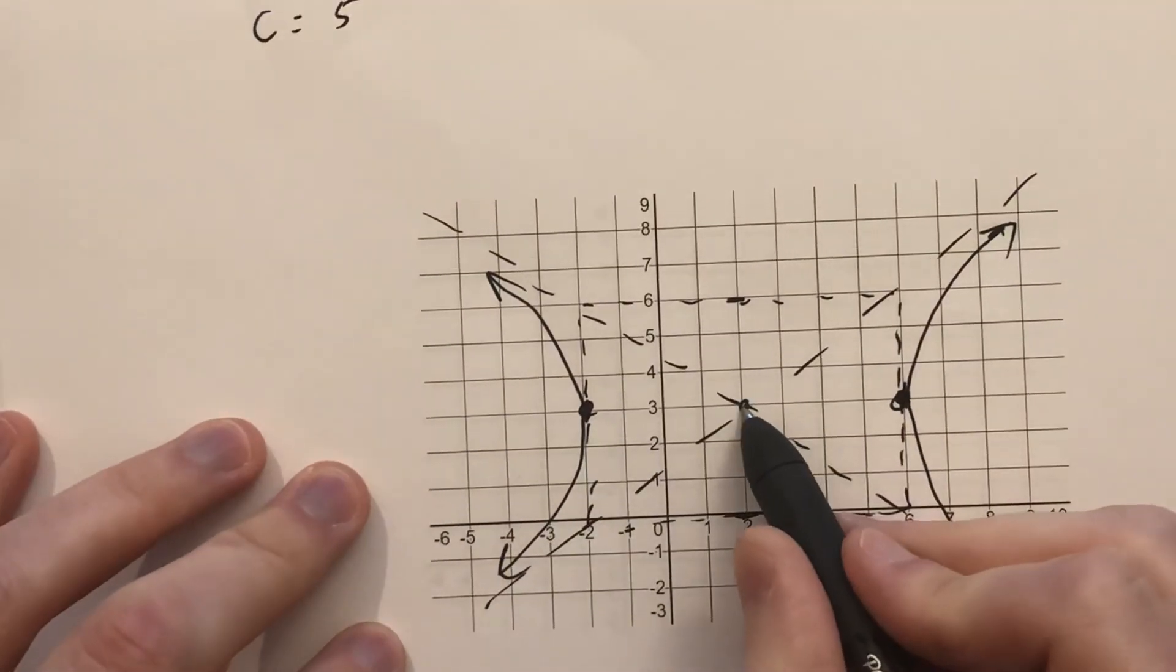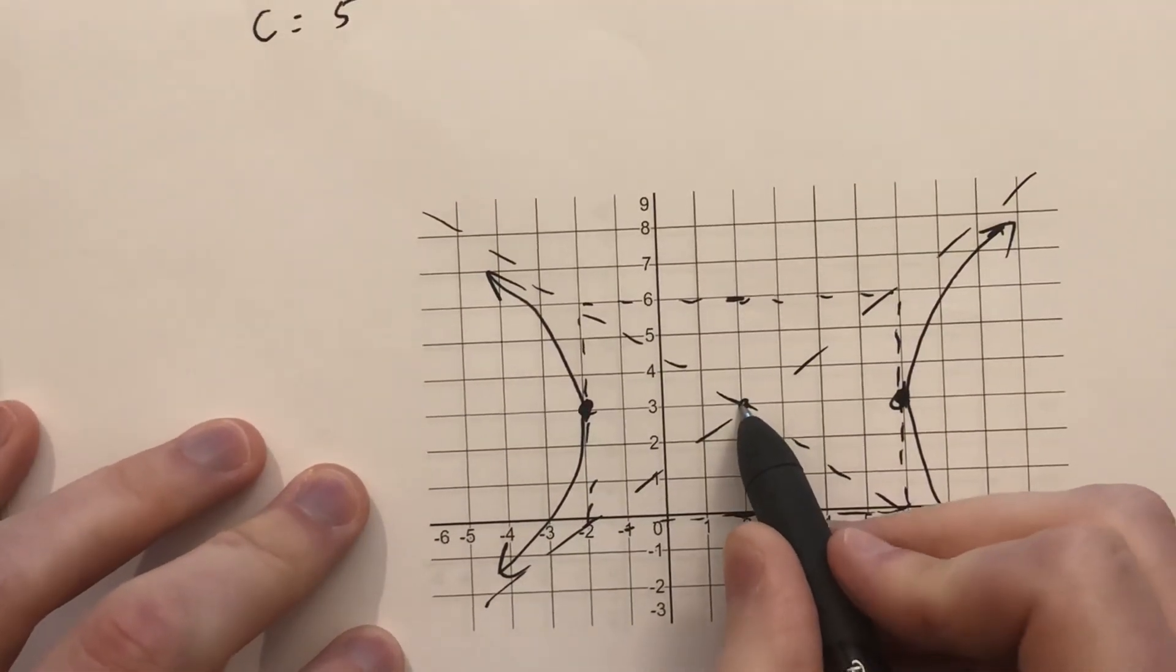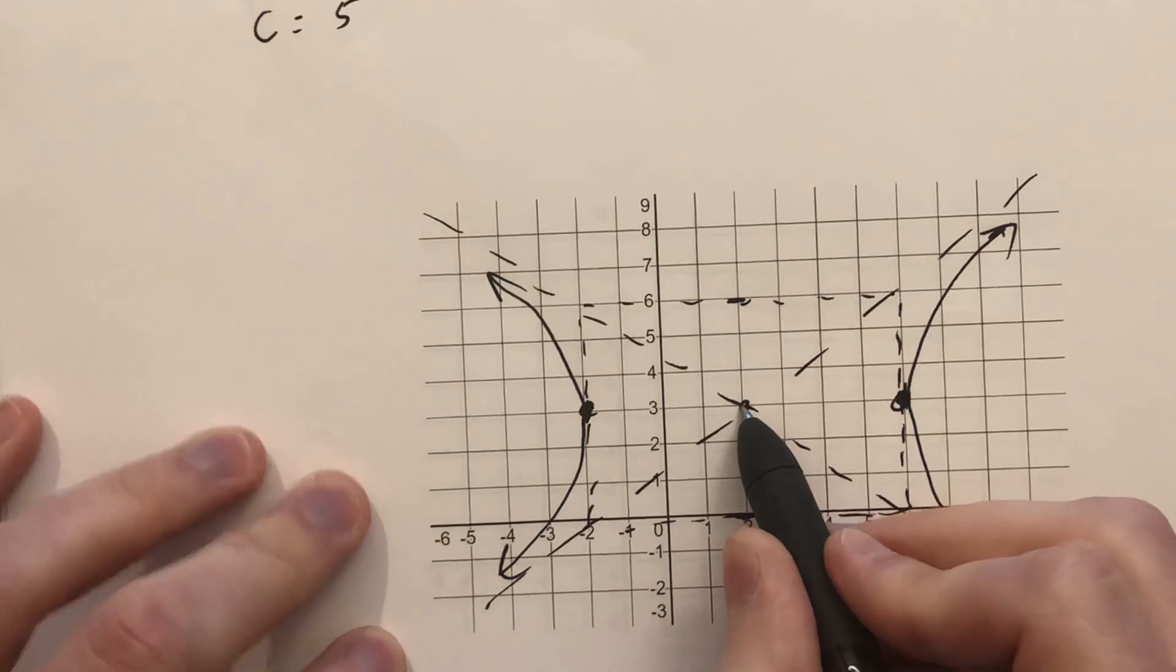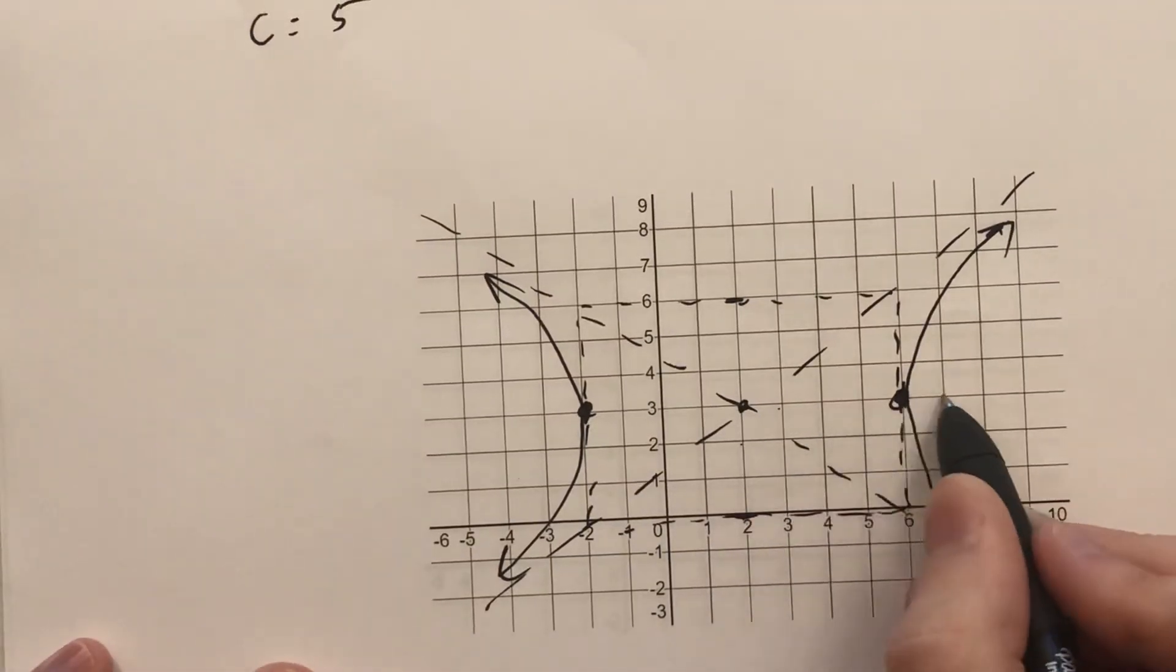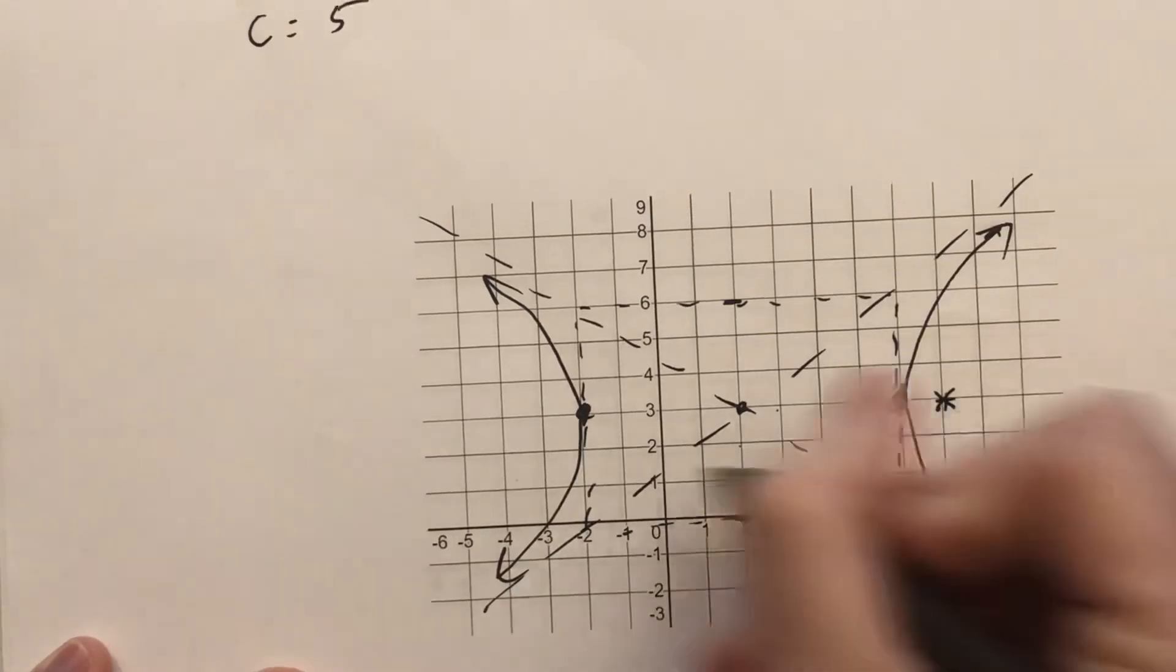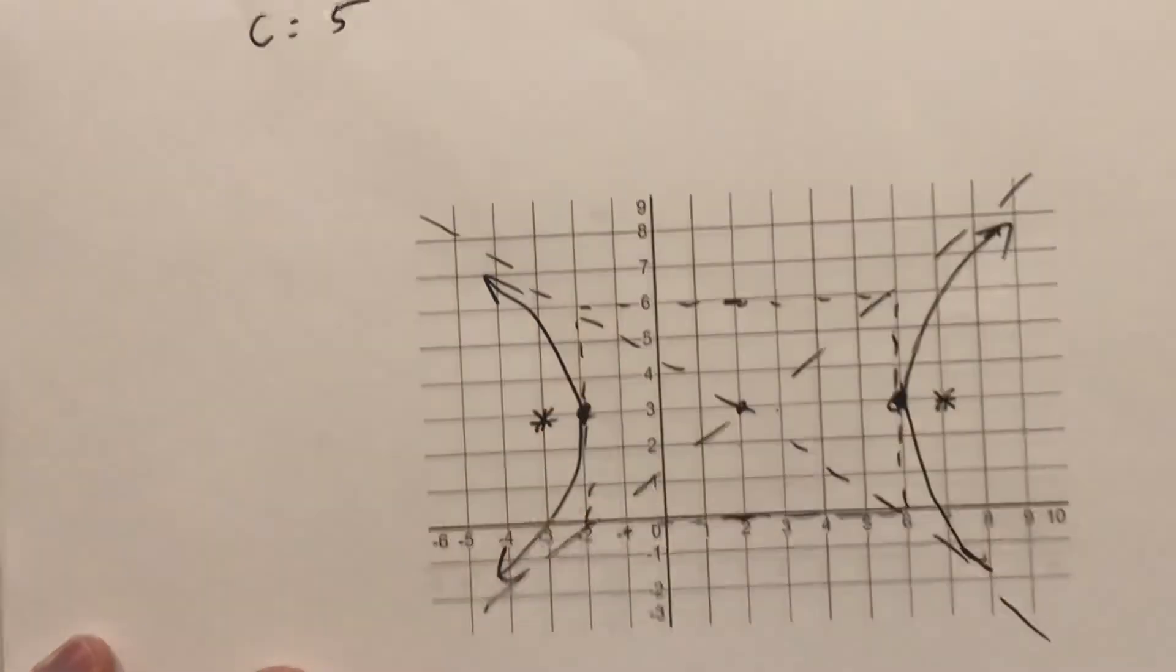So we can look, and we can actually see on this particular graph, because c is a nice value, that the foci will be left and right, and they will be plus or minus 5. So 1, 2, 3, 4, 5. We'll put the foci right there, 5 to the left, foci right there.